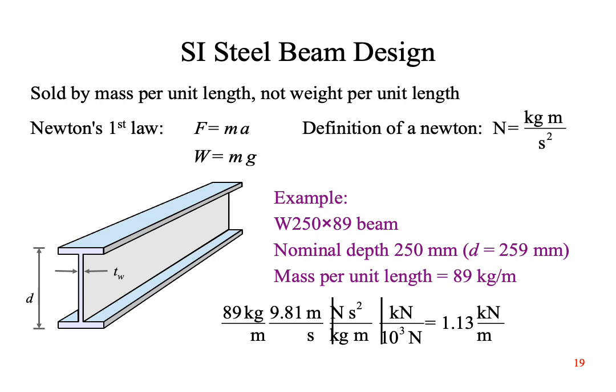Let's look at a typical SI W beam. A W250 by 89 beam has a nominal depth of 250 millimeters. Appendix D lists its actual depth as 259 millimeters, which is about 10 inches. This beam has a mass per unit length of 89 kilograms per meter. Multiply it by the acceleration of gravity. Then insert the definition of the Newton. Convert newtons to kilonewtons, and we have 1.13 kilonewtons per meter. The rest of the beam design procedure is exactly the same as for U.S. customary steel W beams.